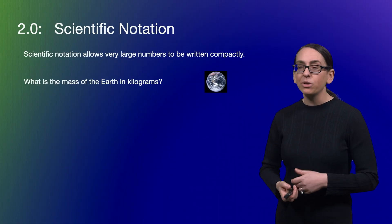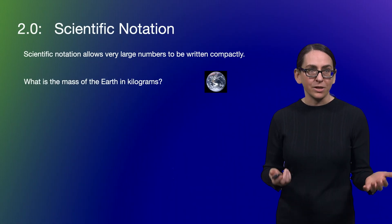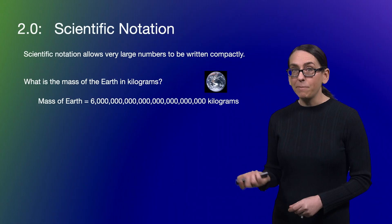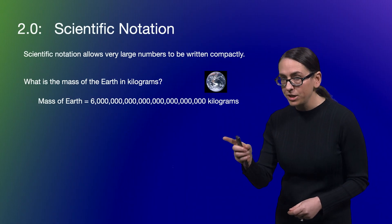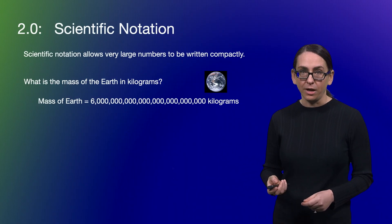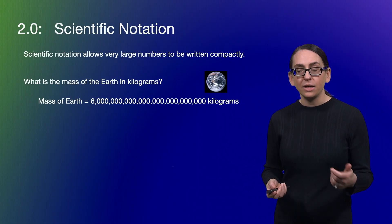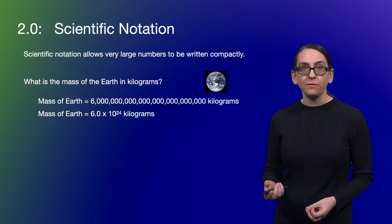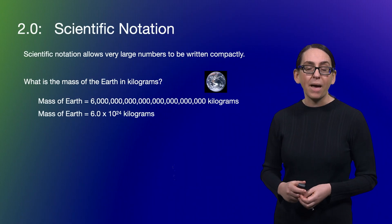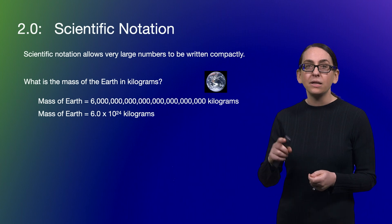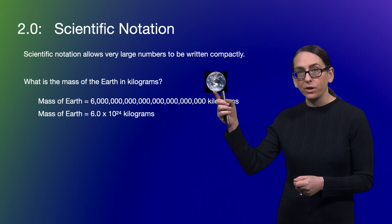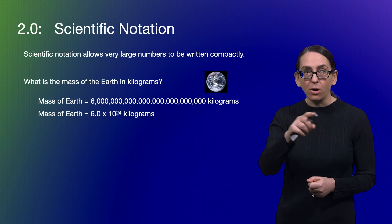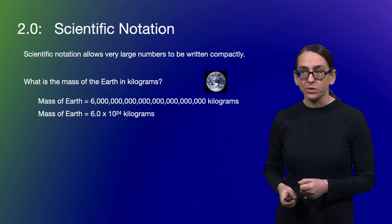For example, if I want to ask what is the mass of Earth in kilograms, that's the mass of Earth in kilograms, and you actually have to count all of those zeros up. Scientific notation allows us to write this quickly. So in scientific notation, the mass of the Earth is 6 times 10 to the 24th kilograms, where 24 is counting up all of those zeros — there are 24 zeros there.